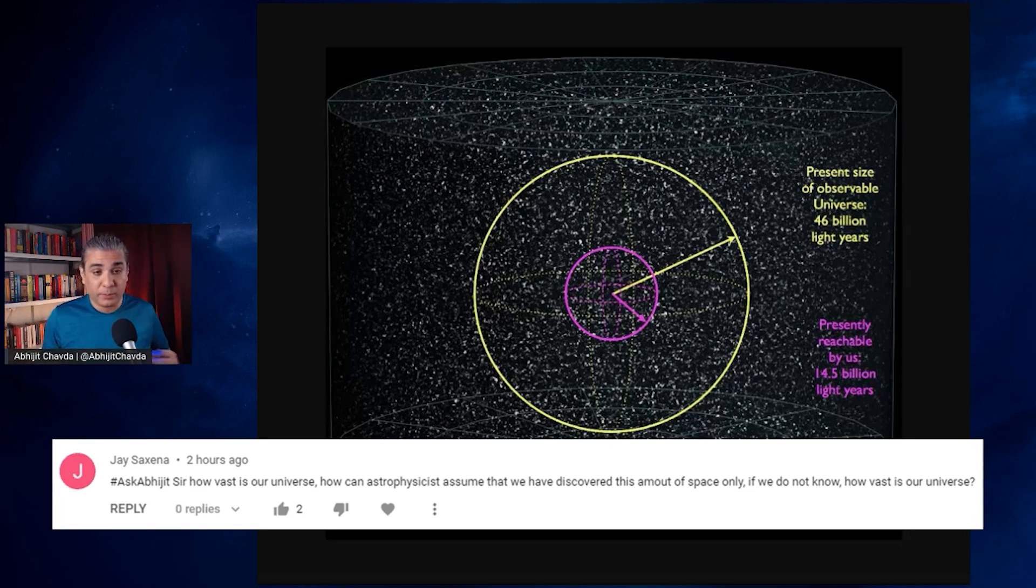We are limited by our observations to observing a slice, a certain portion of the actual universe, and that is a sphere of radius 46 billion light years. We don't assume that we have discovered a certain amount of space. We can calculate it using techniques such as redshift. We know how far is the furthest object that we have ever seen, which is a very distant and very faint galaxy.